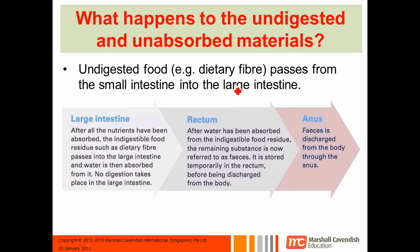What happens to undigested and unabsorbed materials? Once all the nutrients have been absorbed, the digested food passes into the large intestine. Here you have undigested food and material such as dietary fiber. In the large intestine, most of the water gets absorbed. Once it's traveled through the large intestine and most of the water has been removed, what's left is indigested food residue, known as feces.